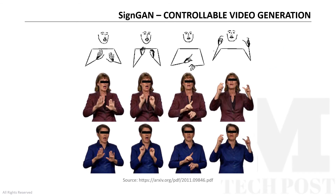As you can see in this figure, during the training process the model learns how to associate information like the clothes and the face of the style image to the skeleton pose. At the same time, the hand pose information is independent of the human signer, and so it is learned independently from the style image, thus enhancing the quality of the final result.